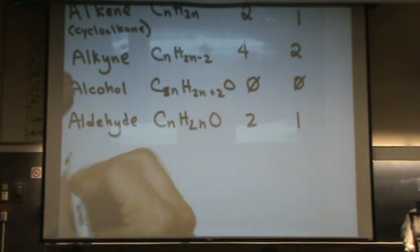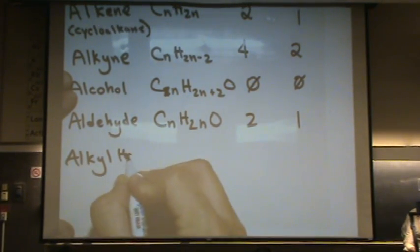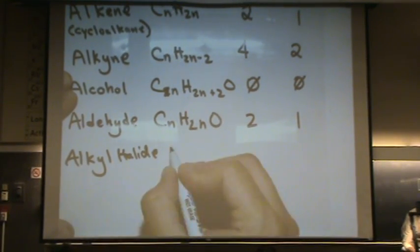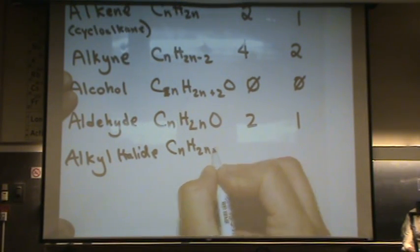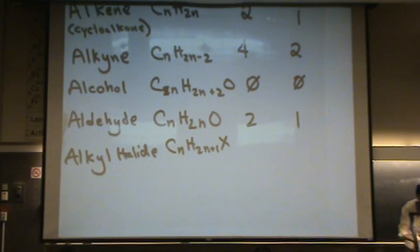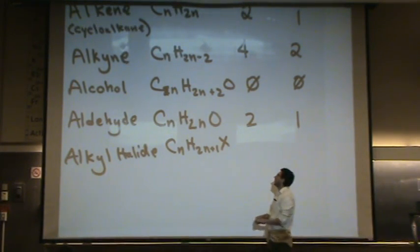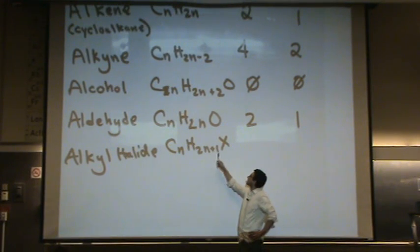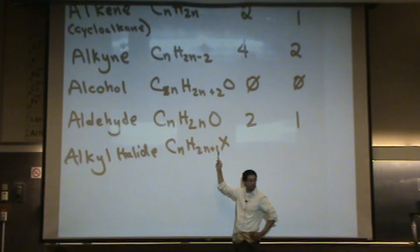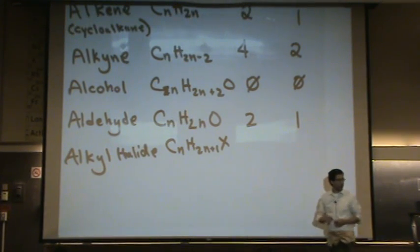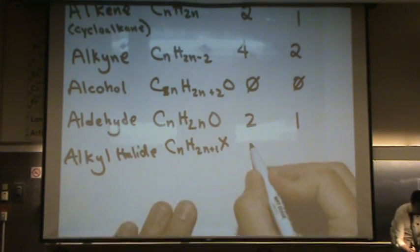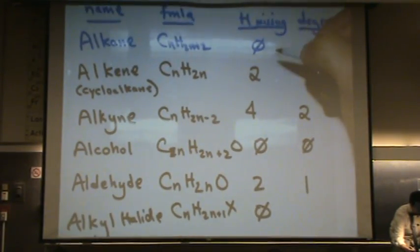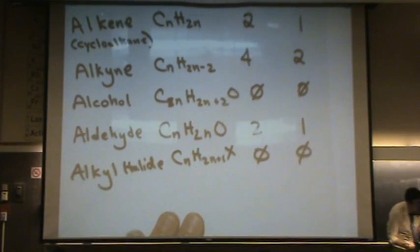One funny one that I'll do is the alkyl halide. That'll have a formula of CnH2n plus 1X. This one's kind of a funny one. We're allowed to count this X as a hydrogen, and the X is like chlorine, bromine, iodine. So if we count that as a hydrogen, it would be 2n plus 2. And so an alkyl halide is fully saturated. It looks a little different than the alkane definitely, but it has no degree of unsaturation.